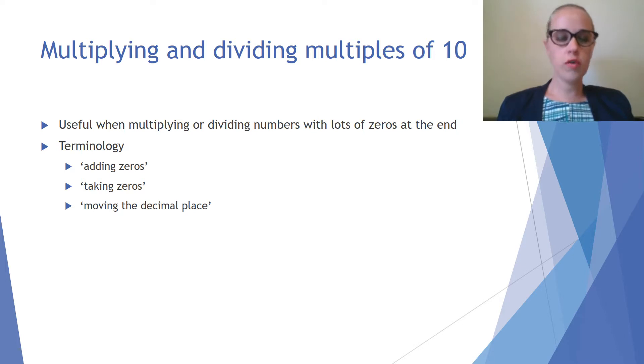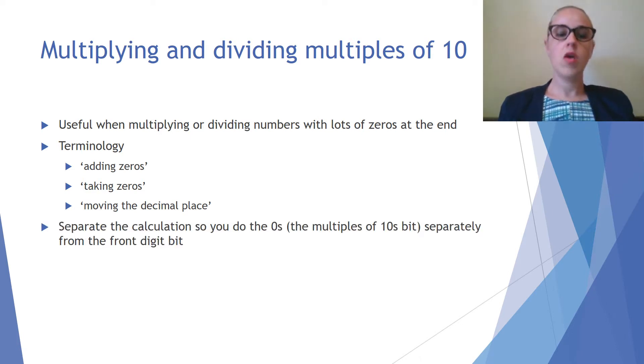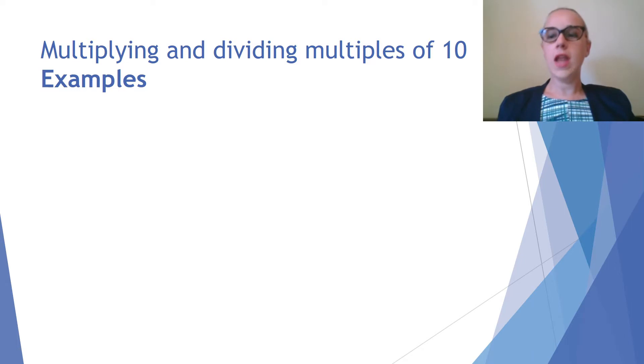You might have heard of these before - phrases like adding zeros, taking zeros, or moving the decimal place. How you do it is that you separate the calculation so the multiples of 10 bits are done separately from the front digit bit. Now we're going to look at some examples of doing this.